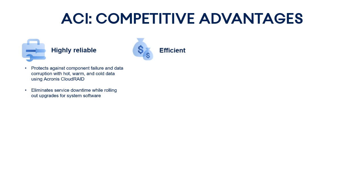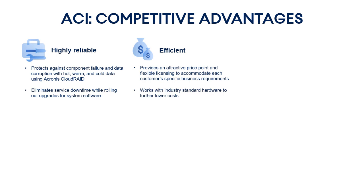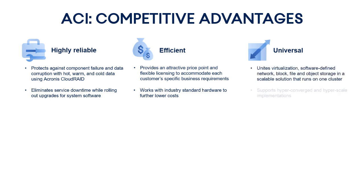Second, Acronis Cyber Infrastructure is highly efficient. It provides an attractive price point and flexible licensing to accommodate each customer's specific business requirements. Moreover, it works with industry-standard hardware to further lower costs. Third, Acronis Cyber Infrastructure is universal. It combines virtualization, software-defined network, block, file, and object storage in a scalable solution that can be run even on one cluster.